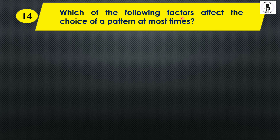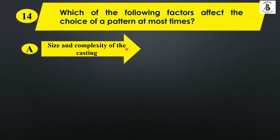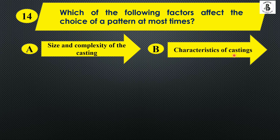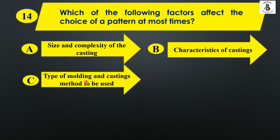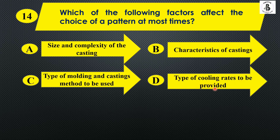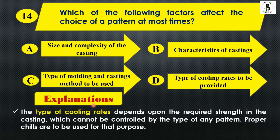Which of the following factors affects the choice of pattern most of the time? Option A: size and complexity of the castings, Option B: characteristics of castings, Option C: type of molding and casting matter to be cast, Option D: type of cooling rates to be provided. The type of cooling rates depends on the required strength of the castings and cannot be controlled by the type of pattern — proper chills are used for that purpose. So the right answer is Option D.